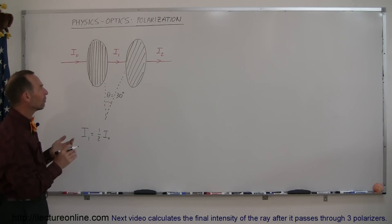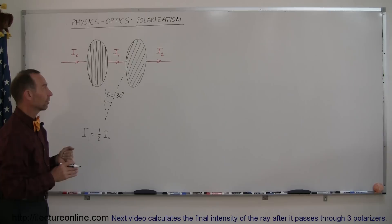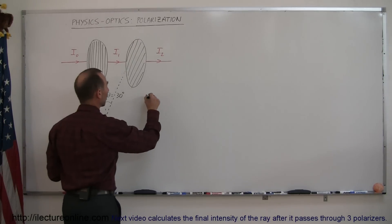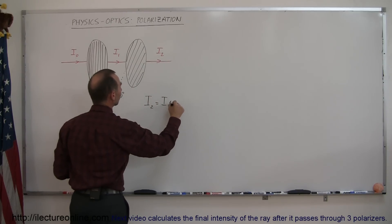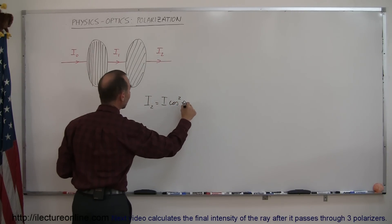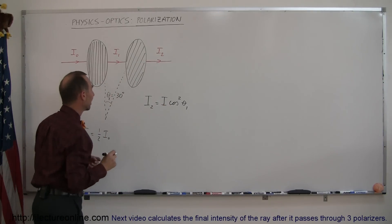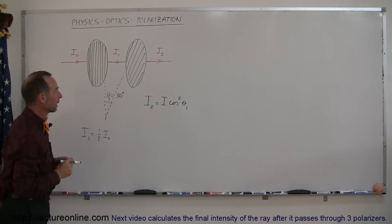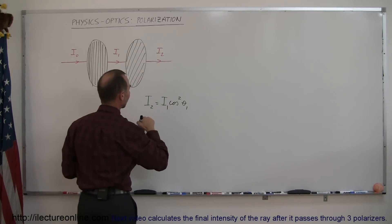But now, how do you figure out what happens when the light then passes through the second polarizer? Well, it turns out that the equation you use is i sub 2 is equal to i sub 1 times the cosine squared of the angle between the first and second polarizers. Let's call this theta sub 1. And plugging in the numbers,